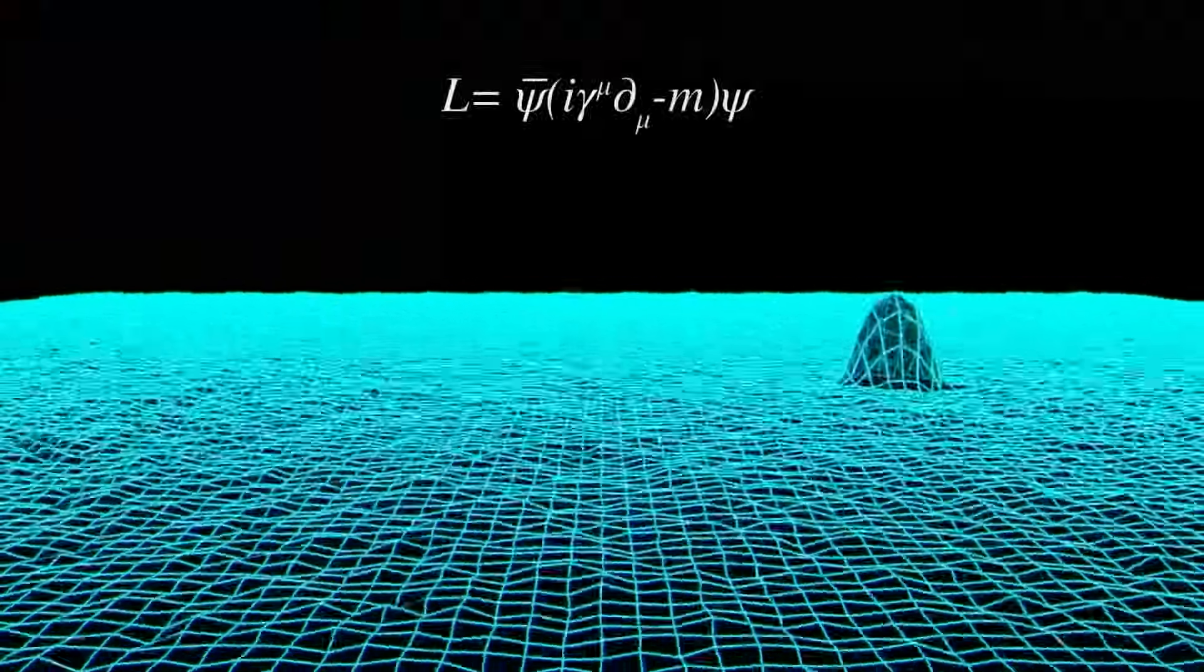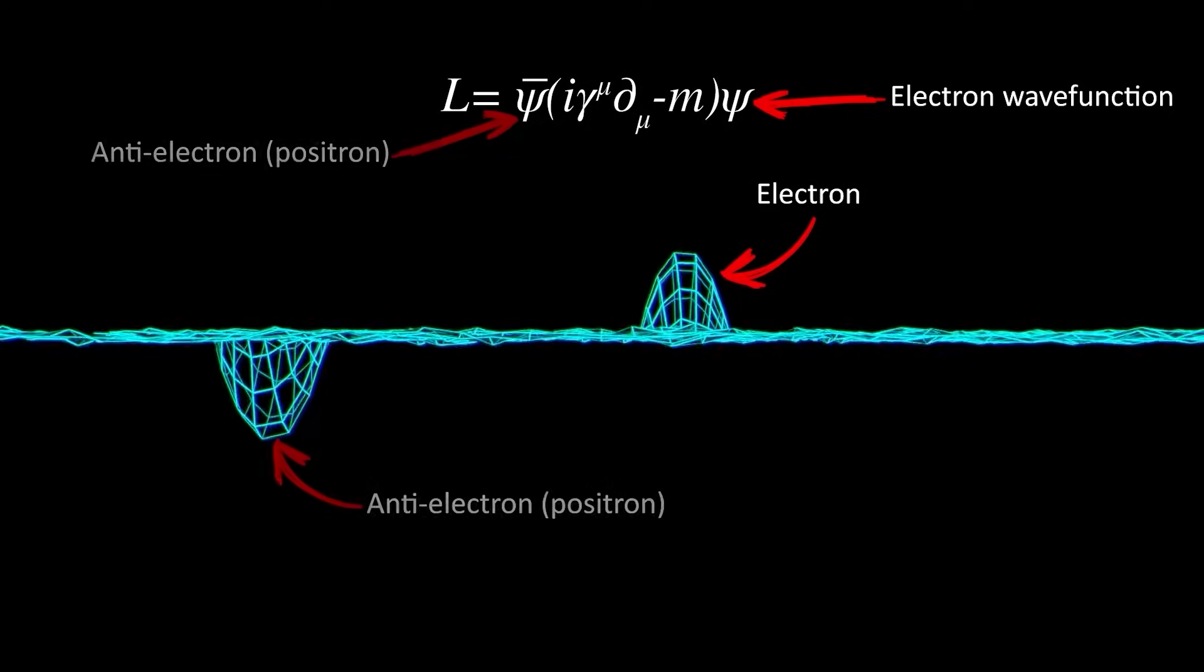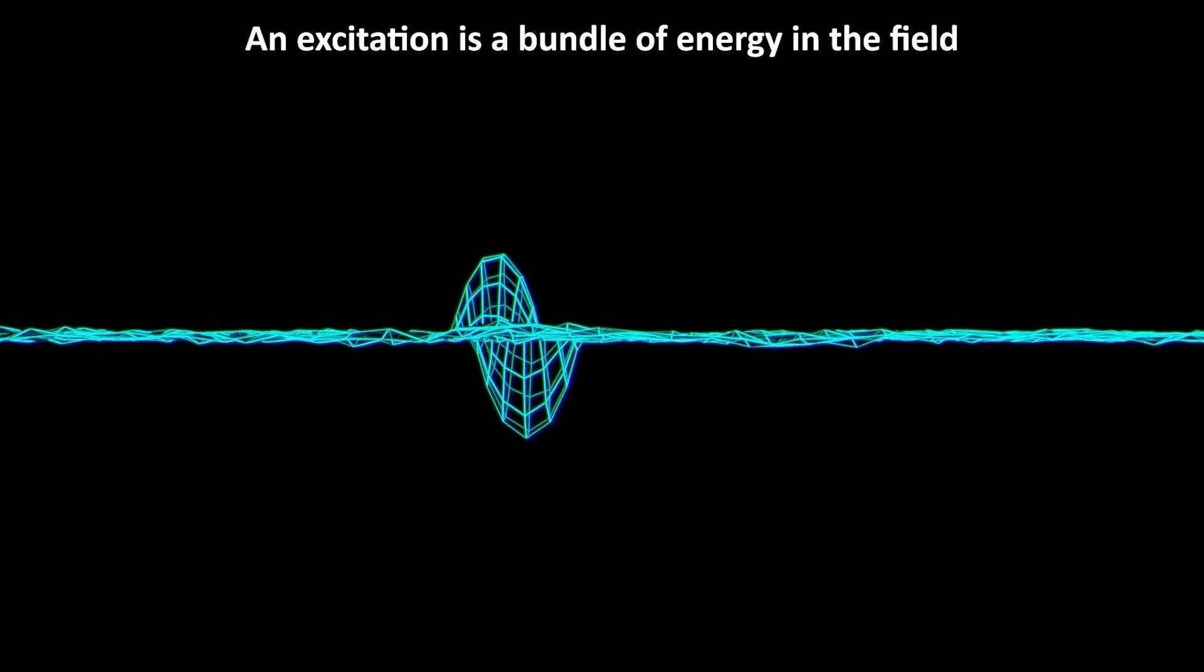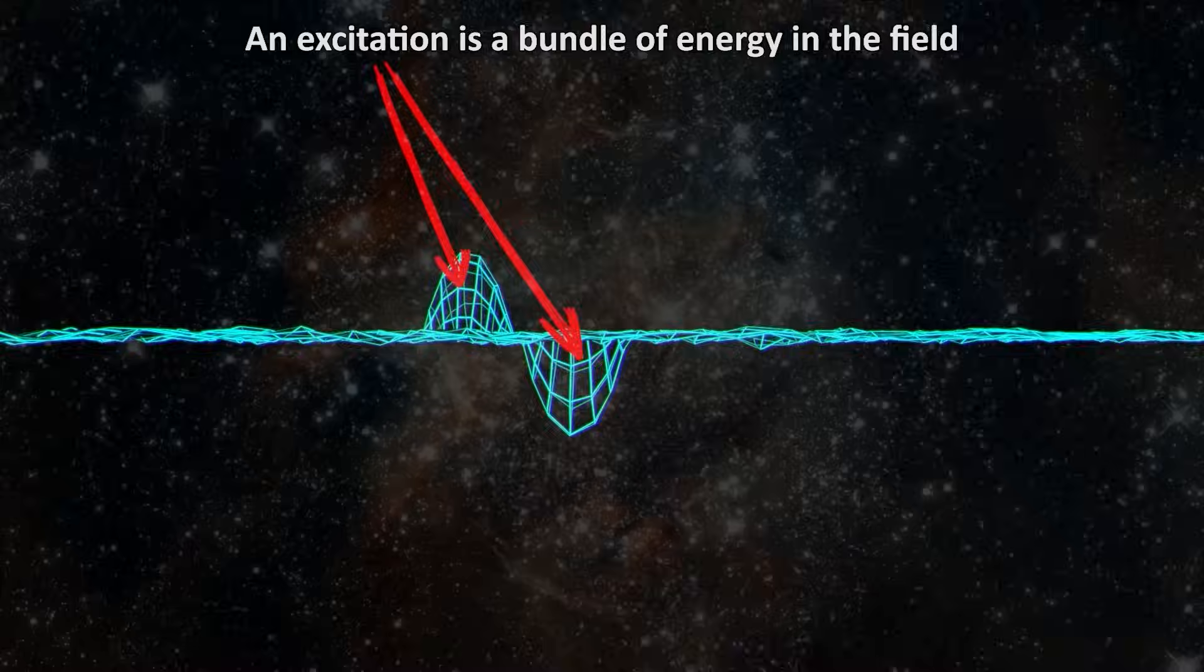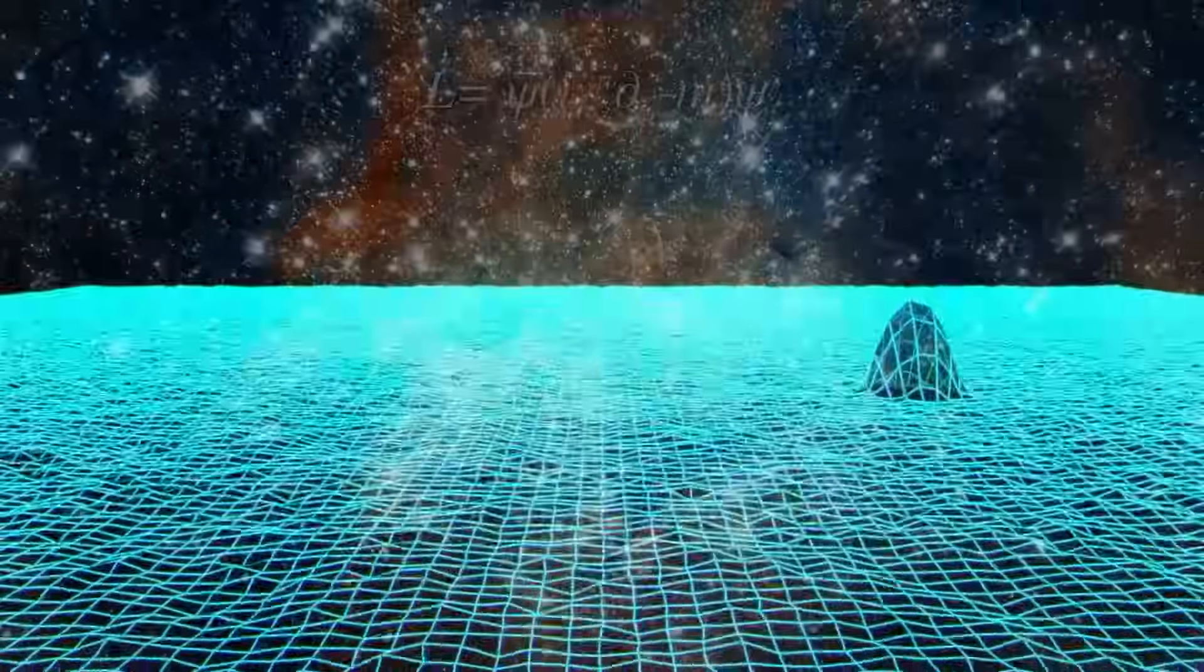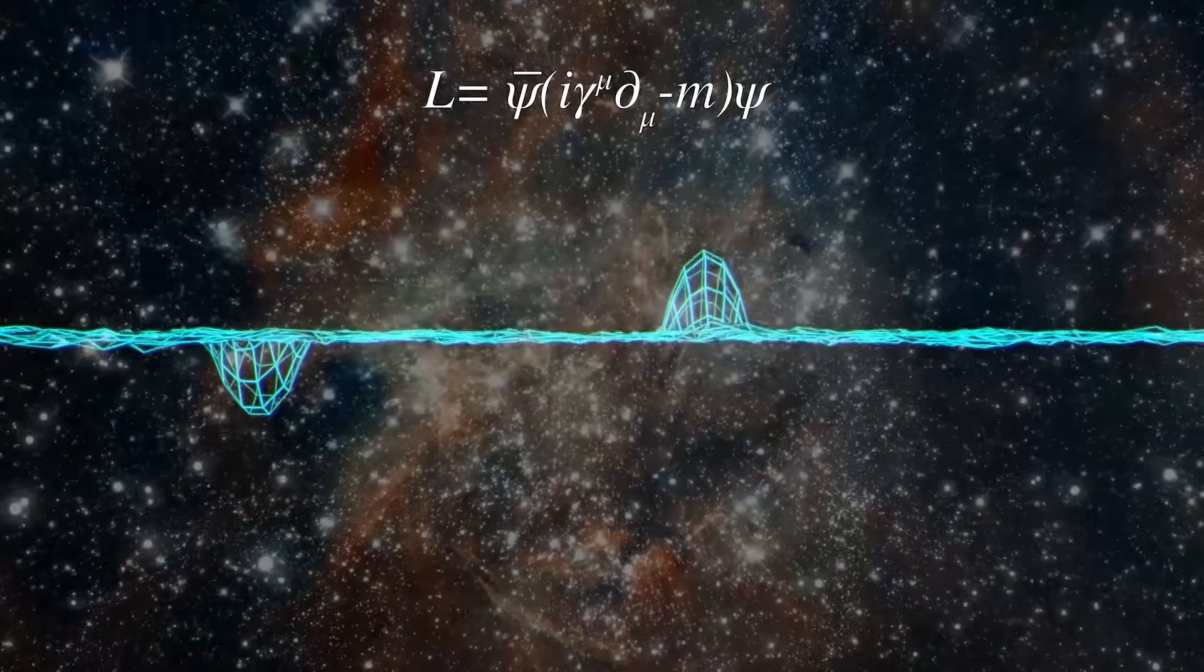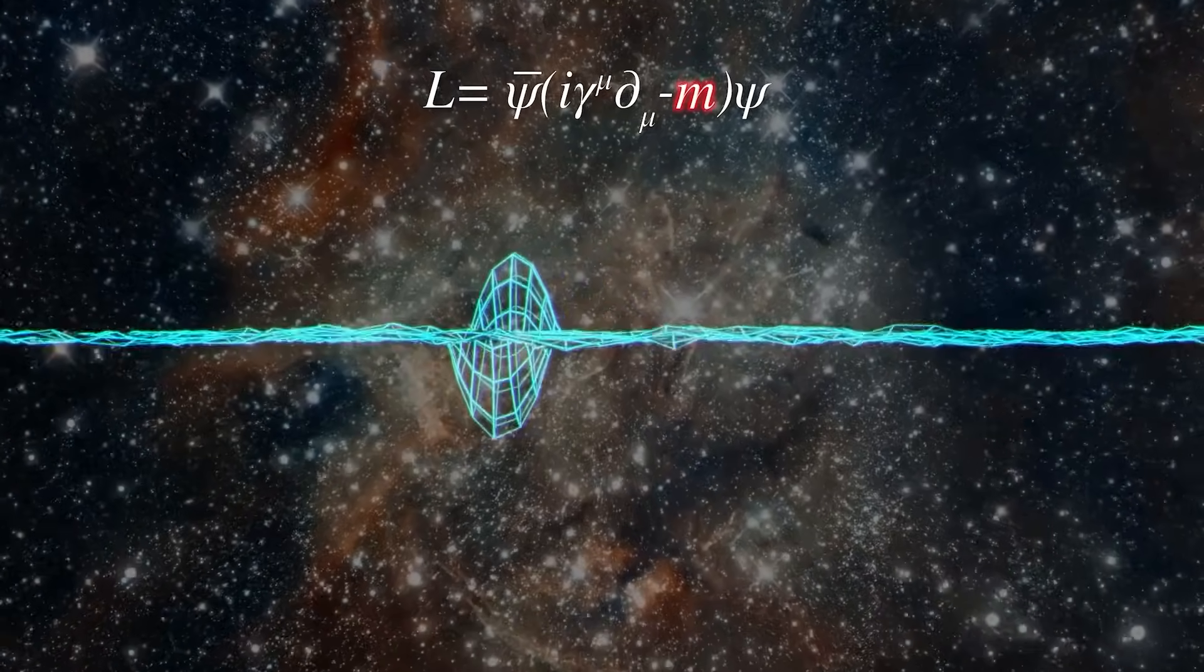The equation describes the electron field with two excitations, that of the electron and that of the antielectron. What do I mean by excitation? An excitation is simply like a bundle of energy in the field, corresponding to the energy of the particle. And this field spans all of spacetime. So very simply put, what this is describing is an electron with a mass, m, which can move in spacetime.